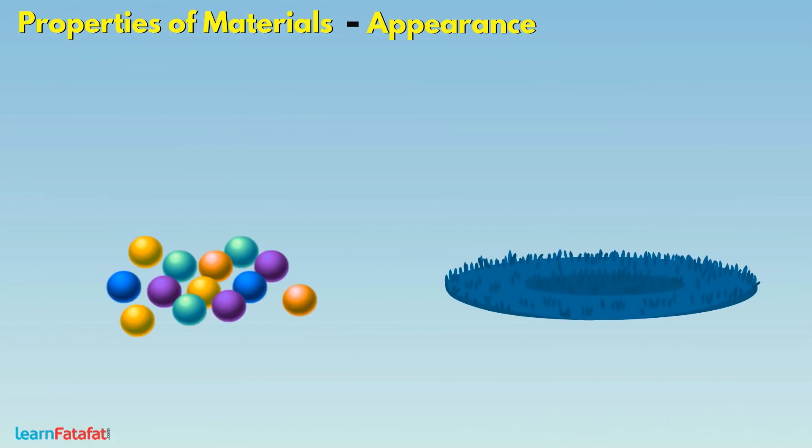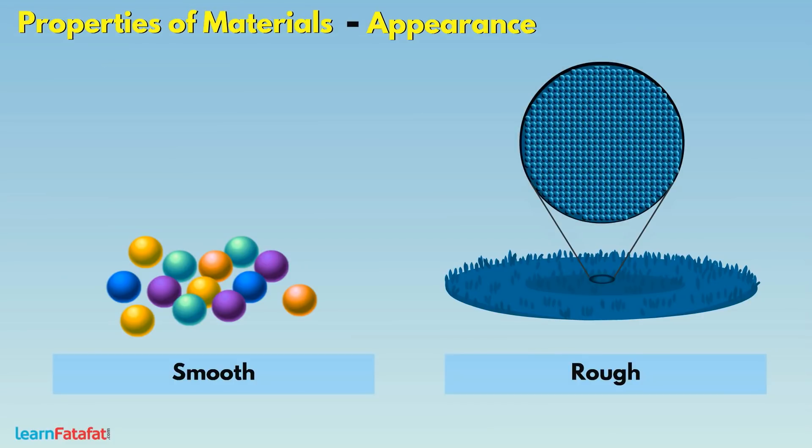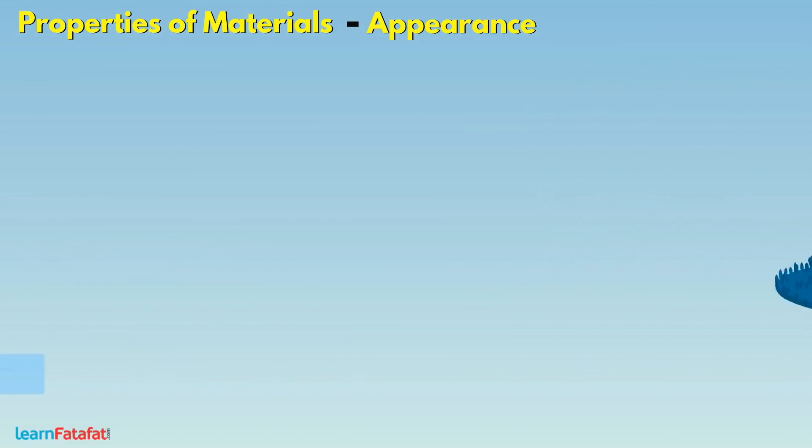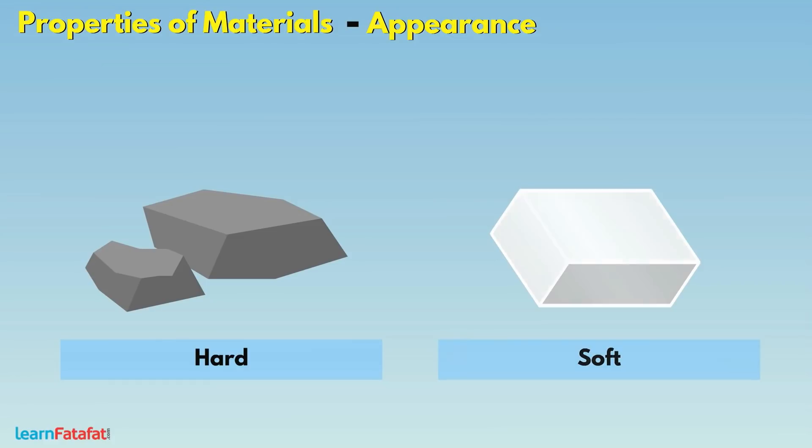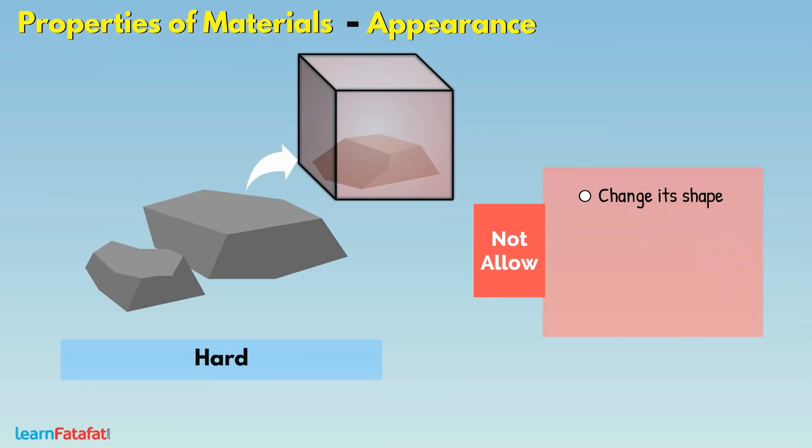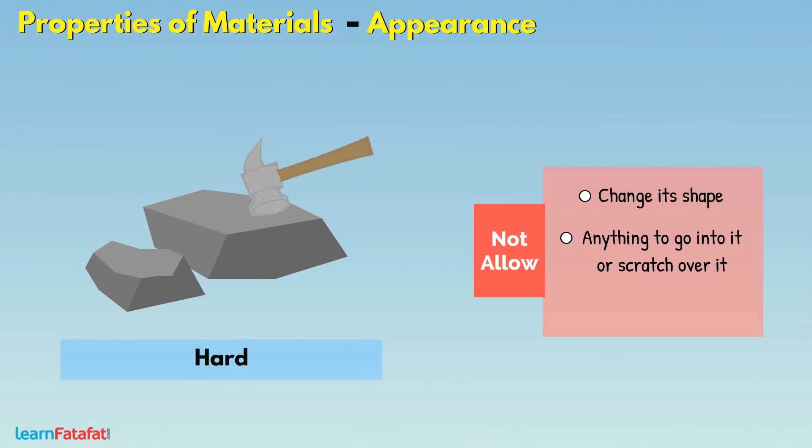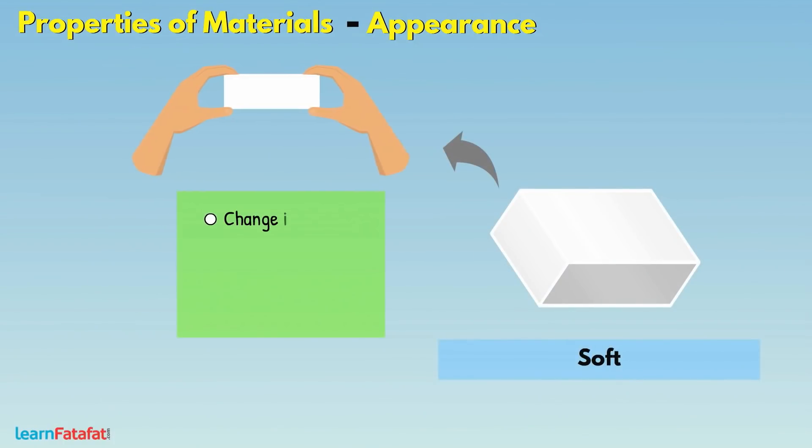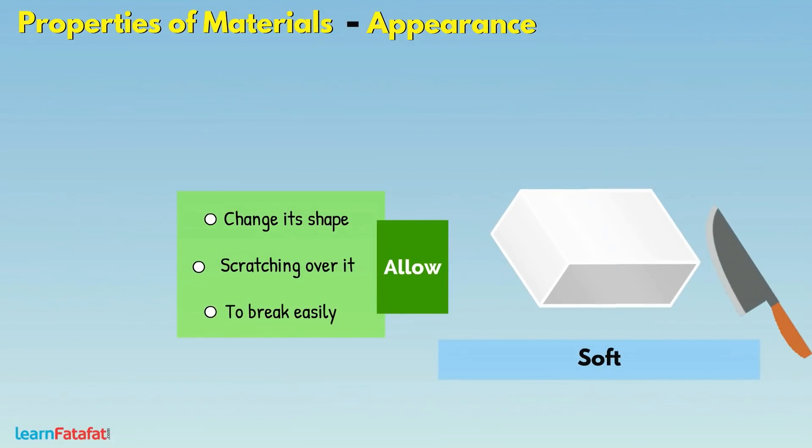If you touch some objects, they appear either smooth or rough. The roughness is due to bumps on surface. Similarly, some objects are hard while others are soft. With the term hardness, we mean that the material does not allow to change its shape. It does not allow anything to go into it or scratch over it. It does not break easily. If a material changes its shape, allows scratching over it or breaks easily, then such material is soft material.